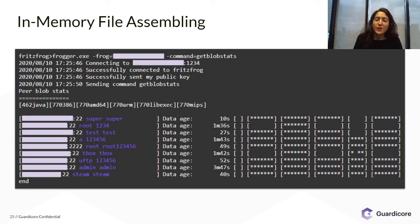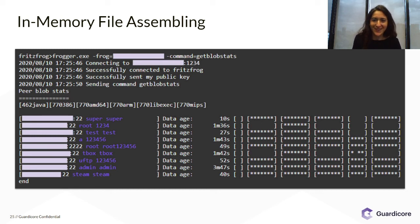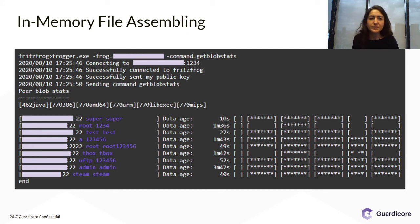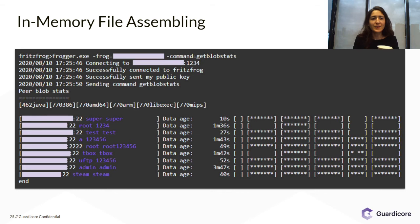One last thing I want to show you that we were able to do with our Frogger tool was to see the representation of file availability in the network. For example, here we take a frog in the wild and we send the get blob stats command. We first connect to this frog over port 1234, which is the peer-to-peer port, and we send get blob stats.